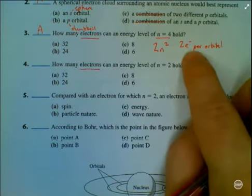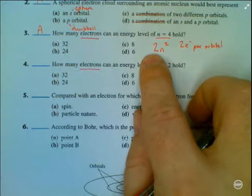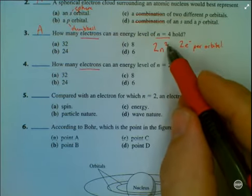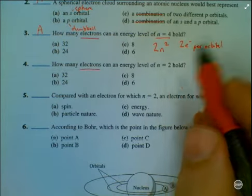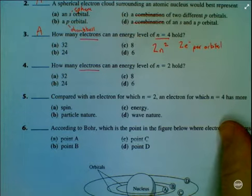But because there are 2 electrons, or at least room for 2 electrons per orbital, we multiply that number by 2. So again, we're going to use 2n². We're going to use the appropriate order of operations, and we're going to square this number first before we multiply it by 2.